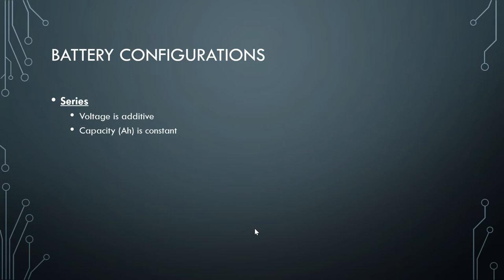There are two common battery configurations: series and parallel. For batteries connected in series, the voltage is additive while the capacity is constant. For batteries connected in parallel, the capacity is additive while the voltage remains the same.